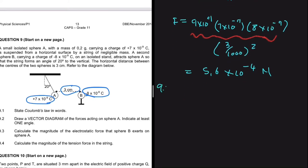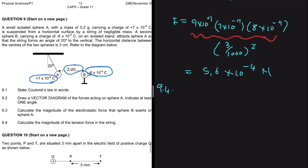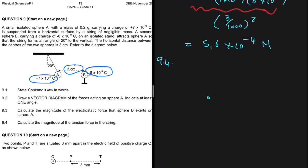Now let's do 9.4, which asks us to calculate the magnitude of the tension force in the string. Looking back at our vector diagram for sphere A, we have Fe (electrostatic force), Fg (gravitational force), and tension at an angle. We deduced this angle is 70 degrees — because the angle from vertical is 20 degrees, and 90 minus 20 equals 70 degrees.